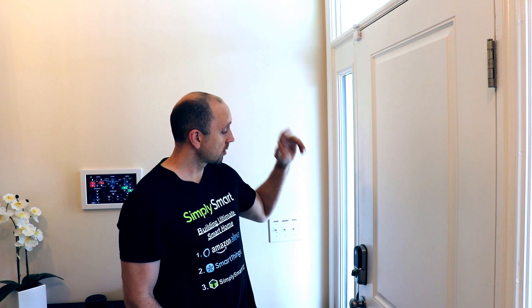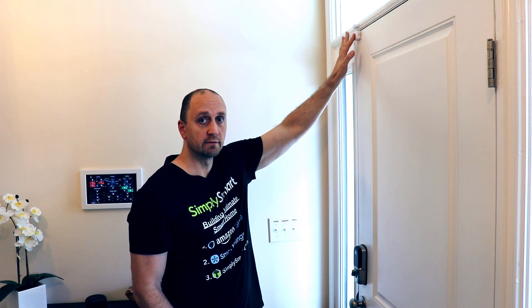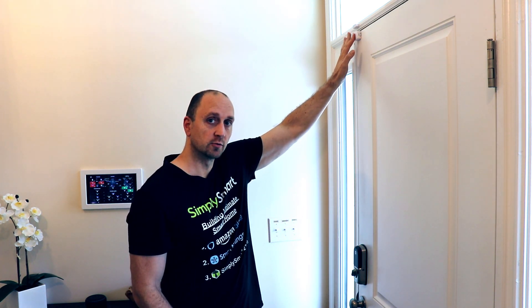In this video, we're going to set up a smart app in SmartThings that will allow our front lock to lock based on the status of the open and close sensor of the door.